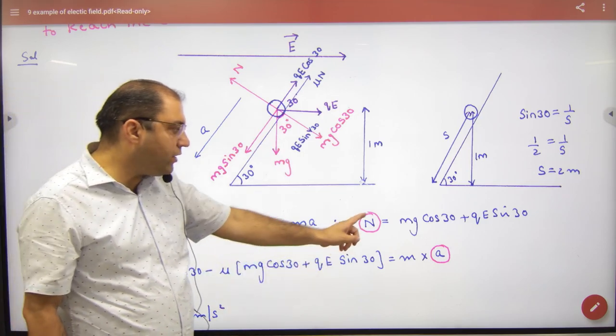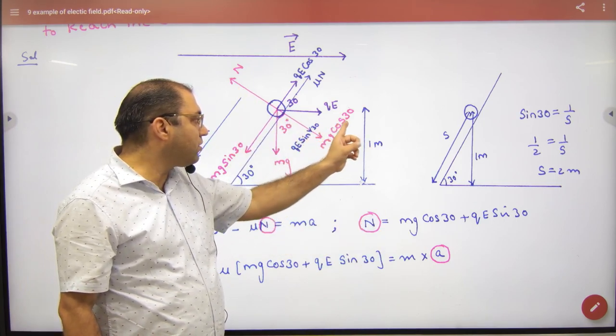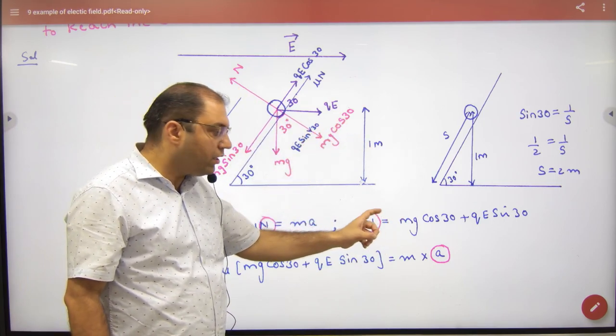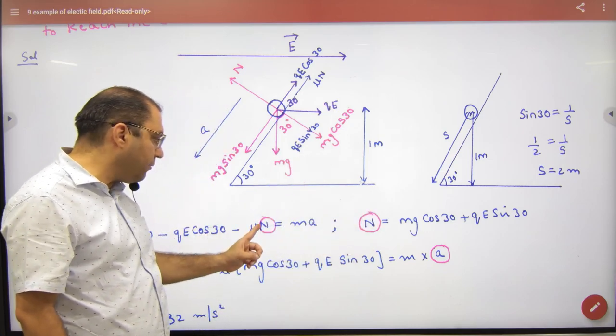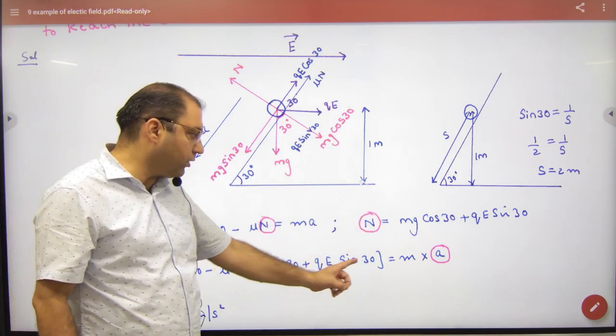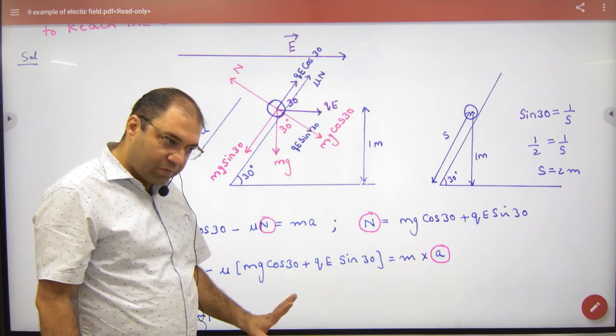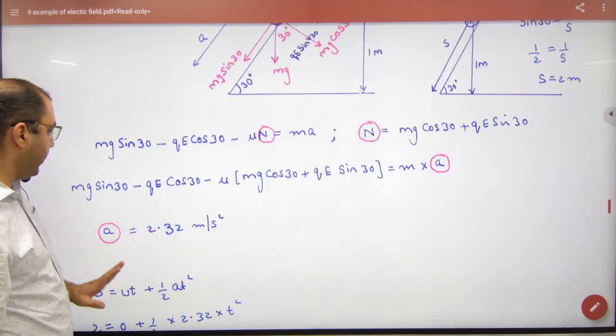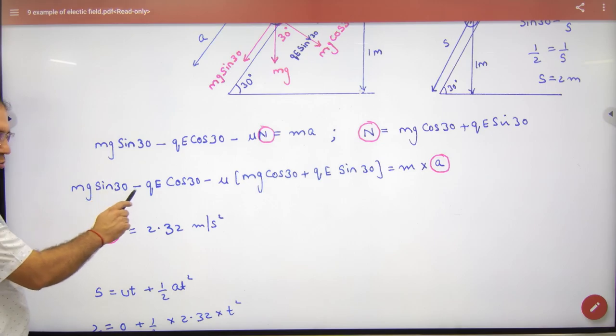So mg sin 30 minus qe cos 30 minus mu times normal reaction is equal to mass into acceleration. So equation is clear, laws of motion. Now you have to find normal reaction which you calculated as mg cos 30 plus qe sin 30. This n we will take from here and put it here. Put the whole thing. Done. Up to here, in this question you know mass, g, q.